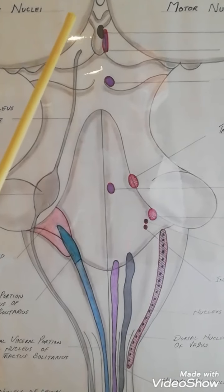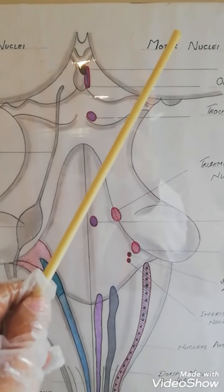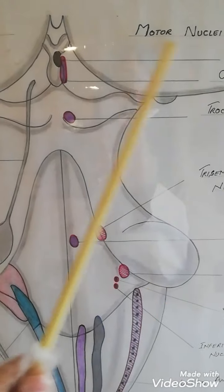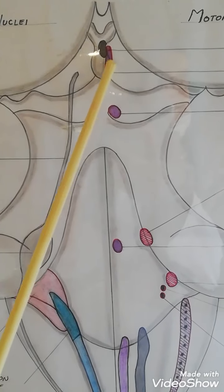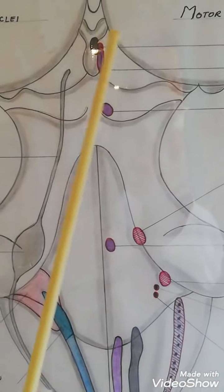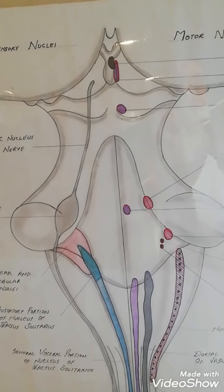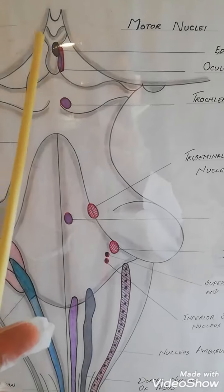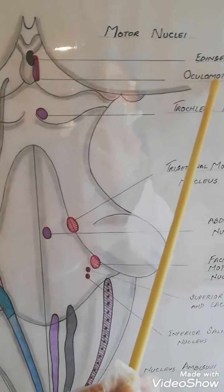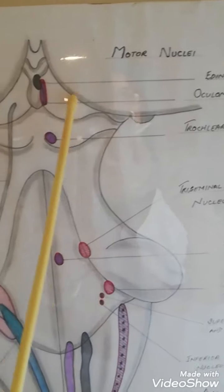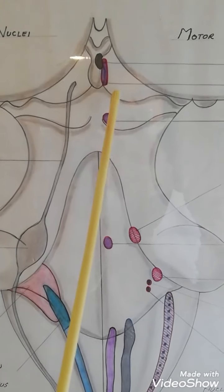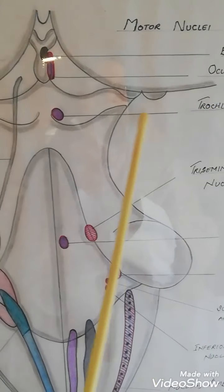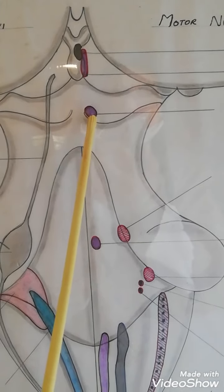Starting with the third cranial nerve nuclei — it is a pure motor nerve with two nuclei: the oculomotor nucleus and, slightly superior to it, the Edinger-Westphal nucleus. Both are present in the midbrain at the level of the superior colliculus. The fourth cranial nerve — the trochlear nerve — is also motor, with the trochlear nucleus at the level of the inferior colliculus.